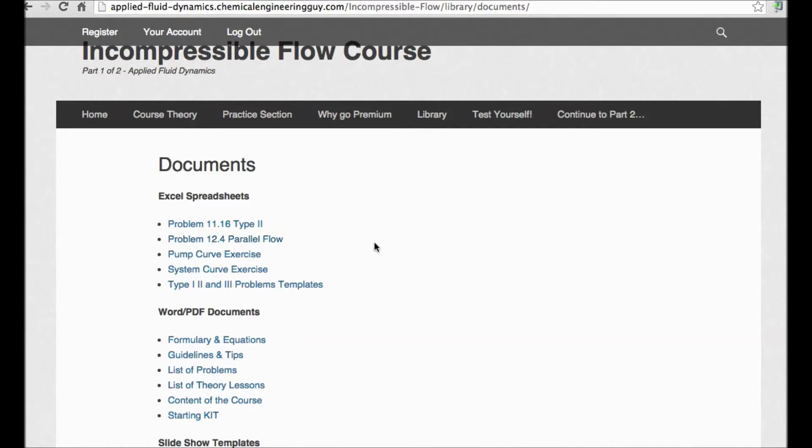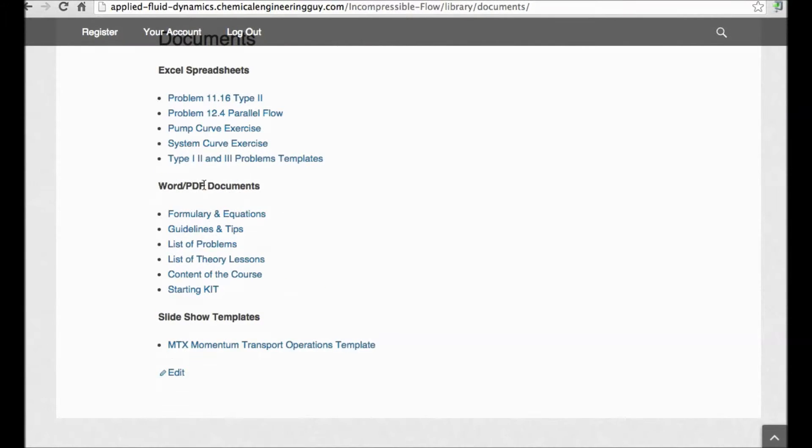For example, parallel flow, what happens when you get plenty of friction in one side versus the other side. Or if you're doing a type 2 problem, you know that you don't have volumetric flow rate. So how can you assign cells in order to get your velocities? Also, you have here a system curve exercise and a pump curve exercise. Once you get that, you also have access to formularies and equations.